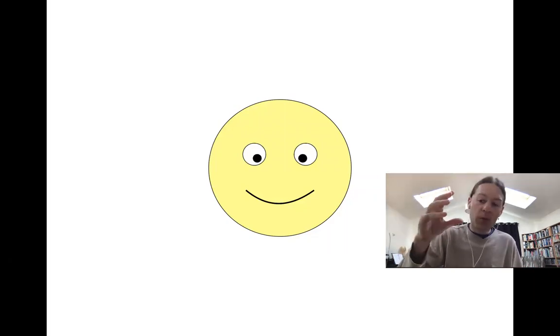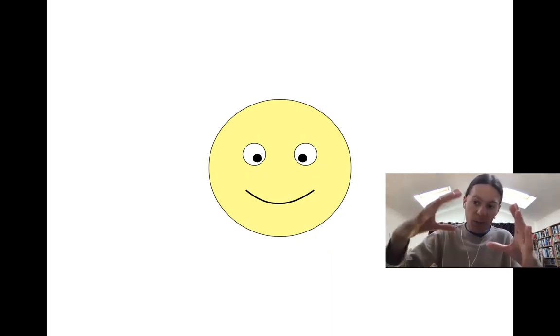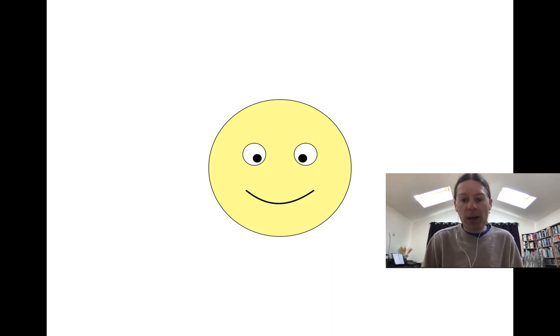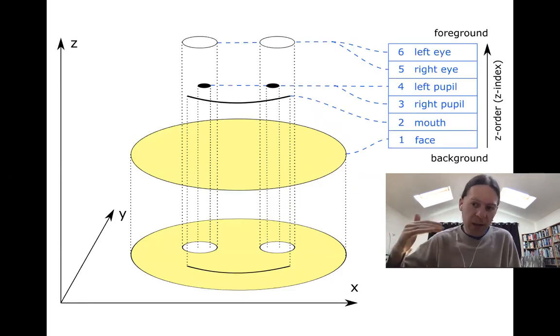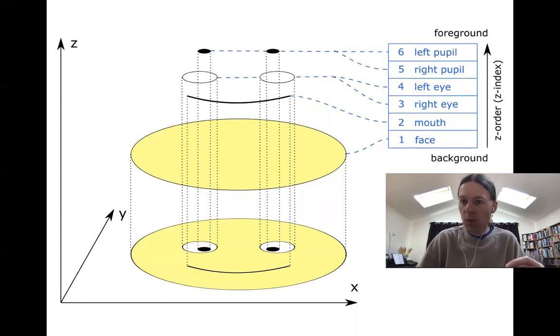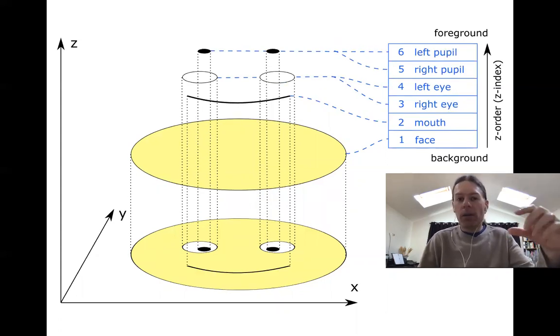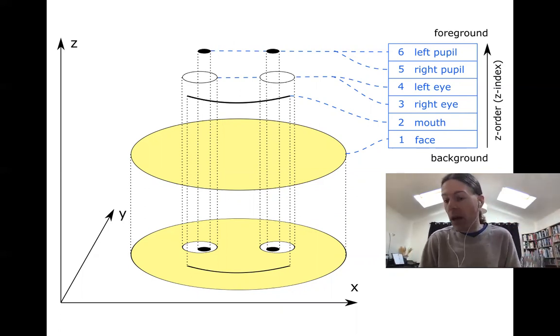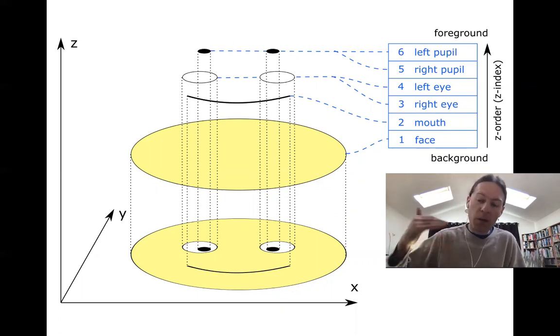Now they're covered up, you can't see the pupils anymore. What we wanted was the black circles on top of the white circles and the white circles on top of the big yellow circle. What we have here in the graphics software is this list or stack of layers. At the bottom you have the face, then the mouth, then the pupils, then the eyes. What we want to do is reorder this list—take the pupils and move them to the top while the white circles are moved down.